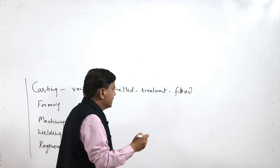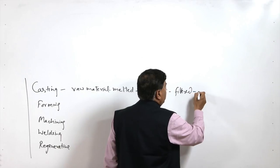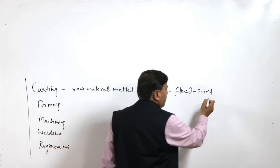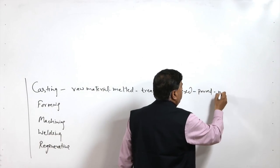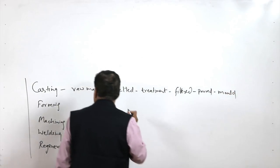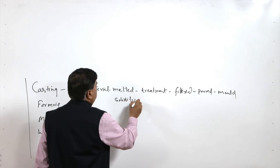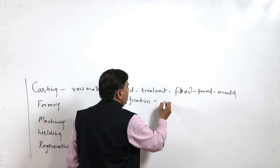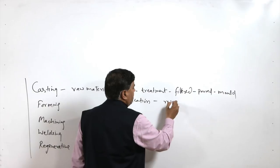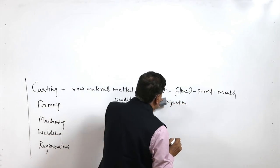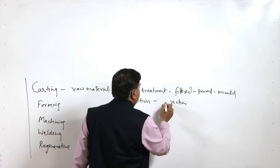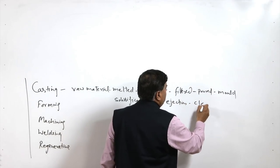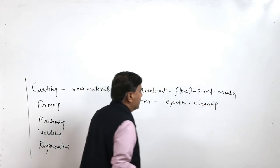Filtration is another step, and then the filtered molten metal is poured into the mould. Pouring of the molten metal into the mould is followed by solidification, and the solidification of the molten metal results in the casting. Once the casting is solidified, it is ejected from the mould and then cleaning and fettling are done as per the process.